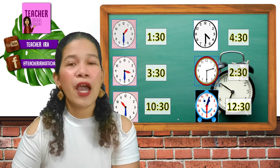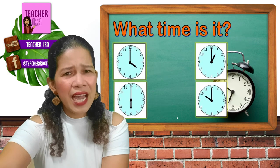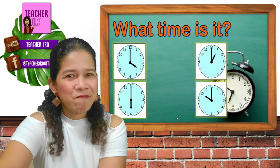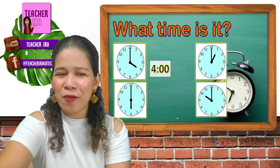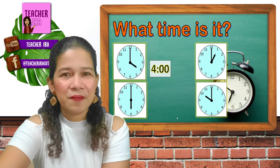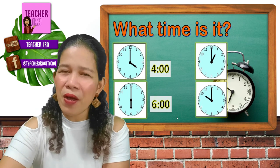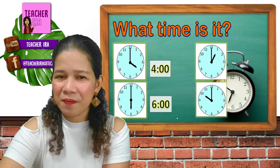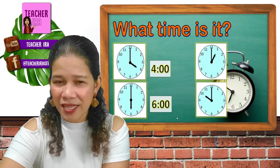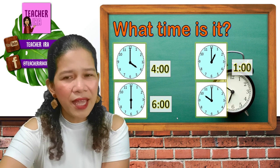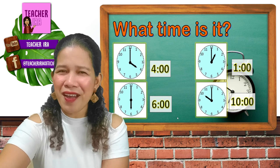Now let me see if you got what I taught you today. I have clocks here — tell me what time is being shown. Correct, it's 4 o'clock. How about the next clock? Yes, it's 6 o'clock. How about the next one — the short hand is on 1 and the long hand is on 12? Yes, it's 1 o'clock. How about the next one? It's 10 o'clock. Great!